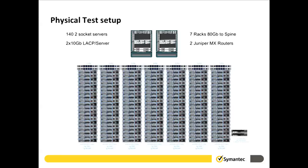Our test lab had seven racks of 20 dual-socket Xeon servers with between 128 and 256 GB of RAM. Each server had two 10-gig NICs plumbed via LACP into a top-of-rack switch, and we had 2x 40-gig connections from each ToR up into our spine. For one of our test cases with Contrail, we used Juniper MXs for our gateway service.